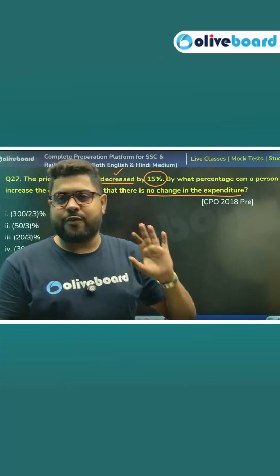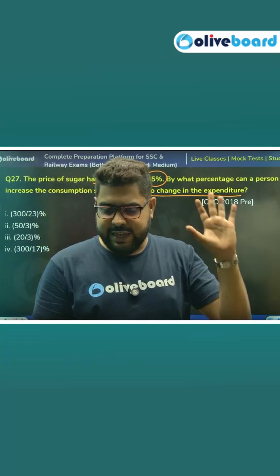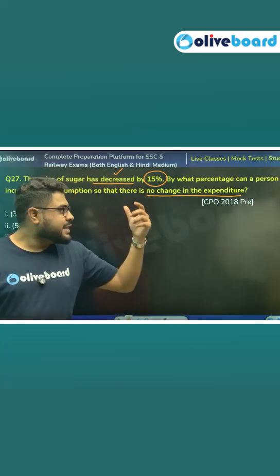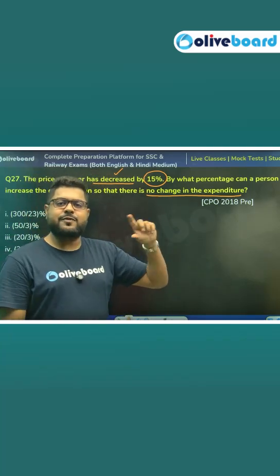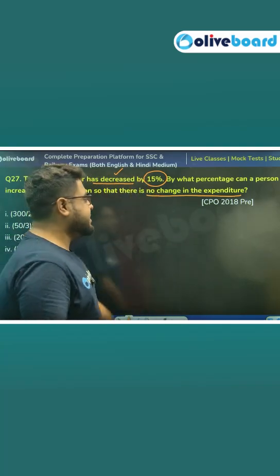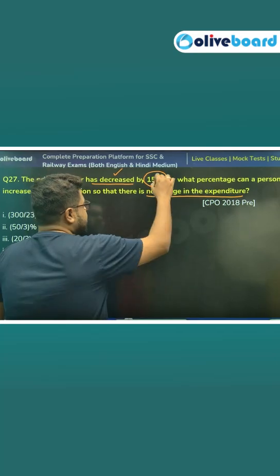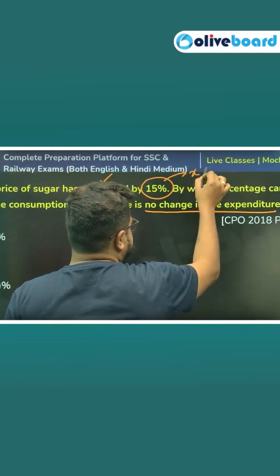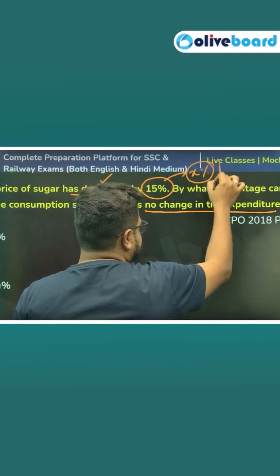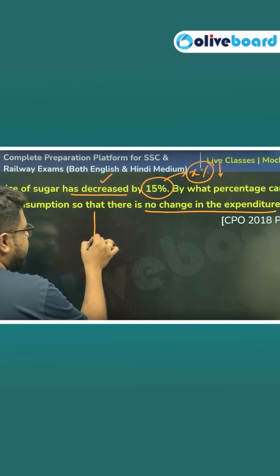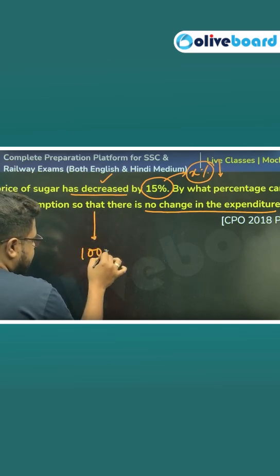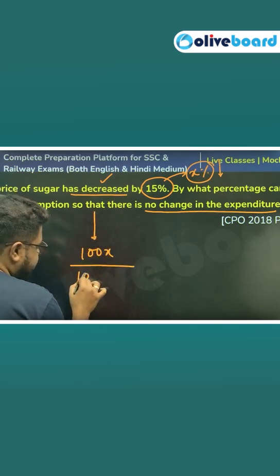So what will be the shortcut for that? If you have gone through the last session, this will be very similar with a minor change. The change is: if there is x percent decrement in the price, then consumption will go up by 100x divided by 100.